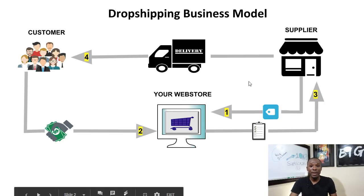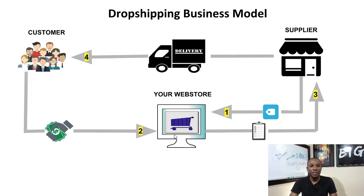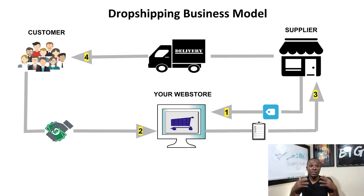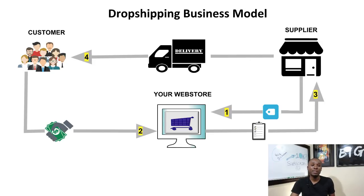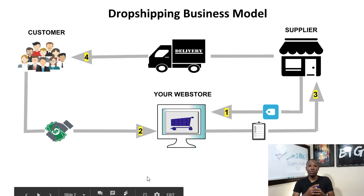Once you have your supplier, which is AliExpress, and your website on Shopify, all you need now is to market to customers — get people to come to your store and buy products. This is where Facebook ads, Instagram ads, and Google ads come in. Once customers come to your store and buy a product, they pay you. You then take that money and send it to your supplier, who will ship the product directly to your customer.